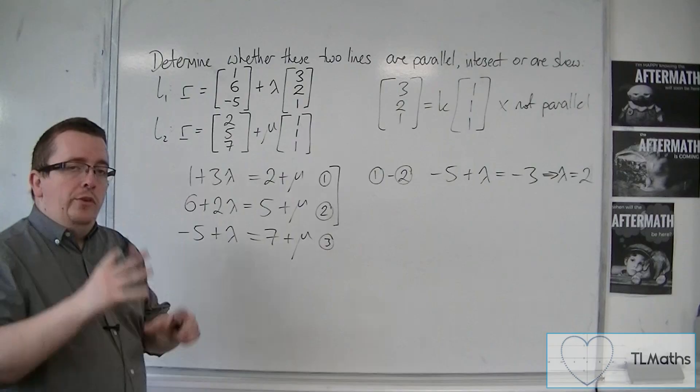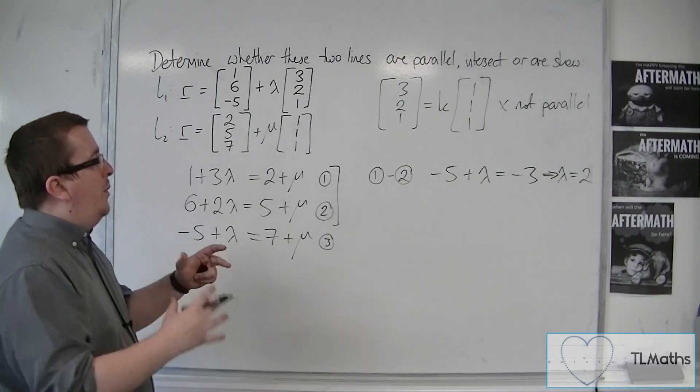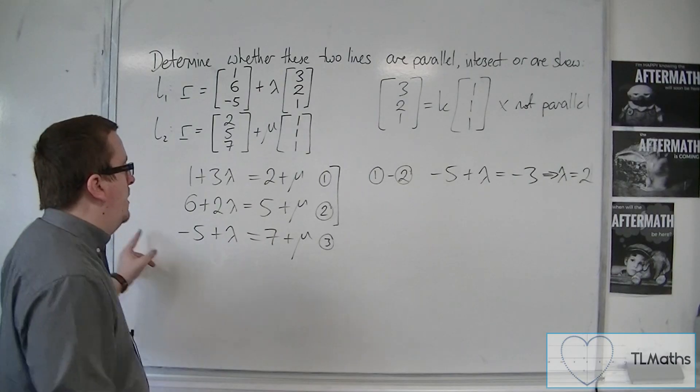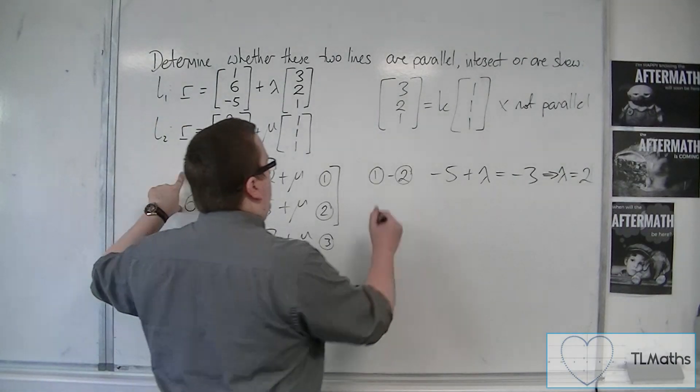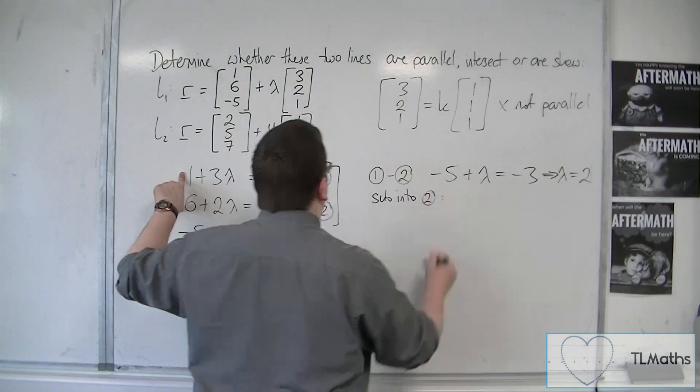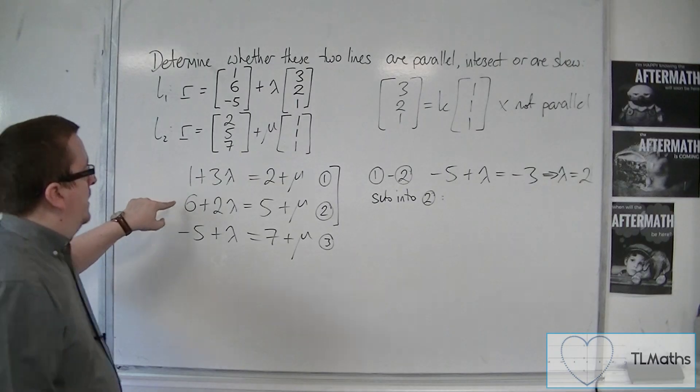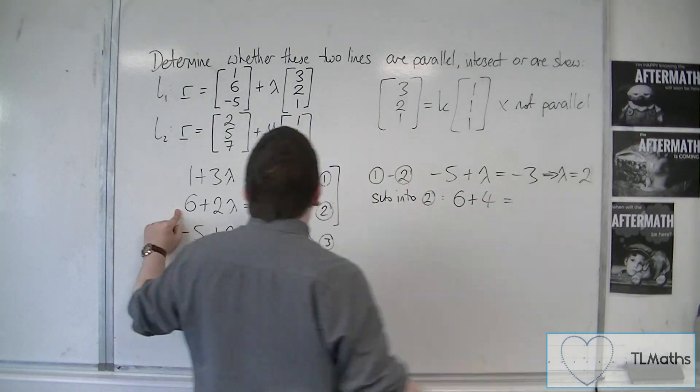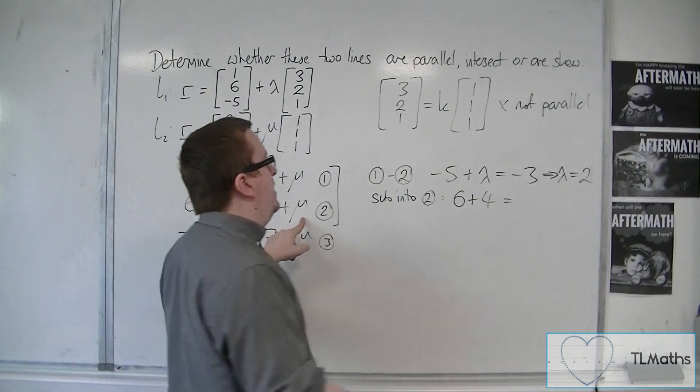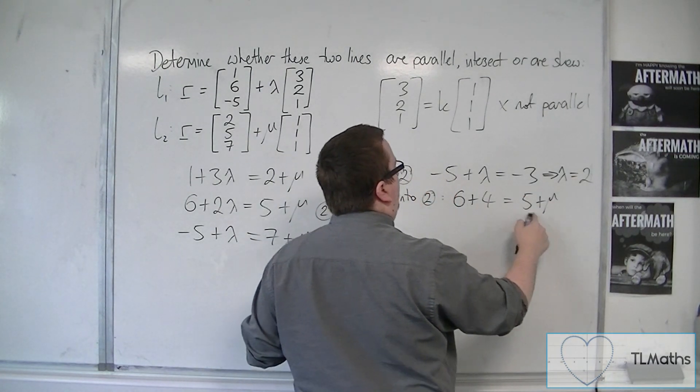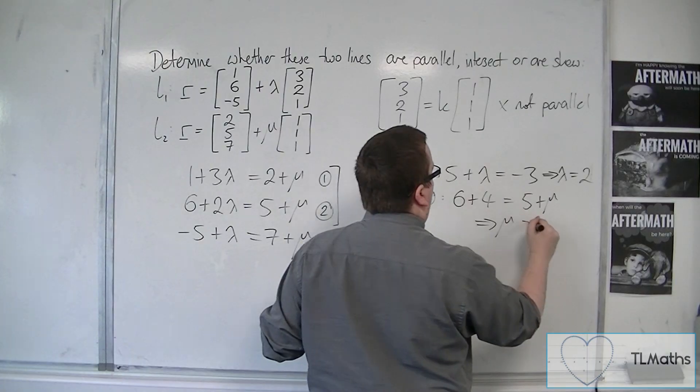So you now substitute lambda is 2 into either of the two equations that you're working with. We're still ignoring number 3. So we're going to sub into equation 2. For example, 6 plus 2 lots of 2 is equal to 5 plus mu. So 10 equals 5 plus mu, and so mu must be 5.